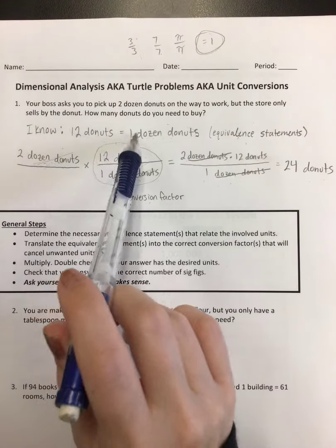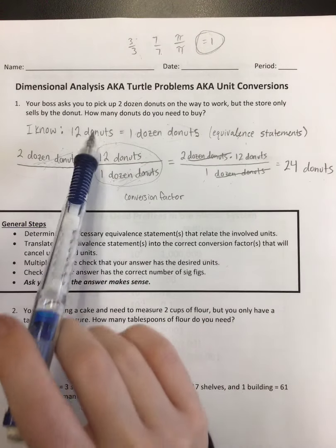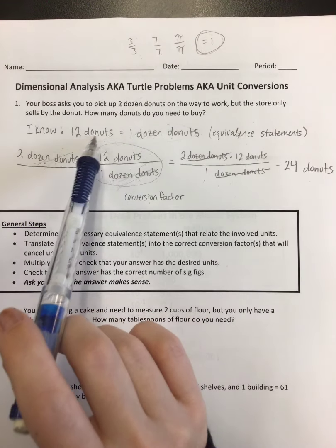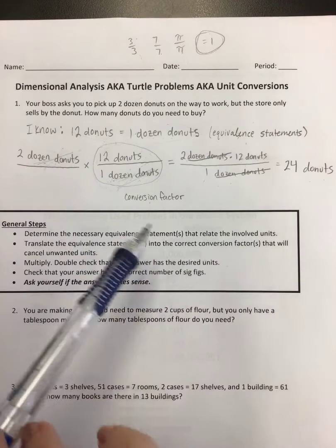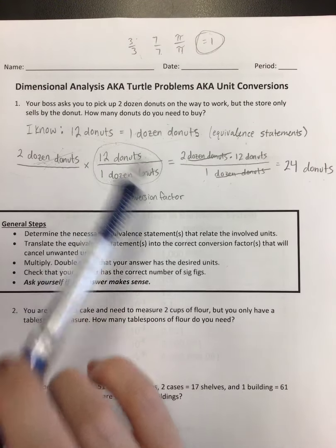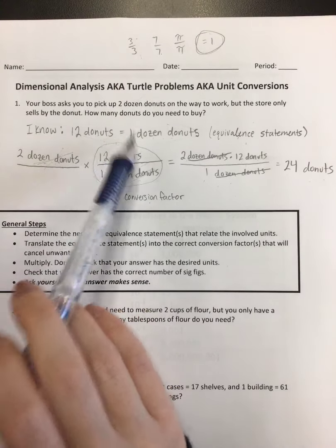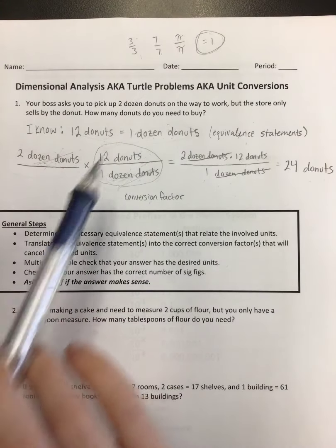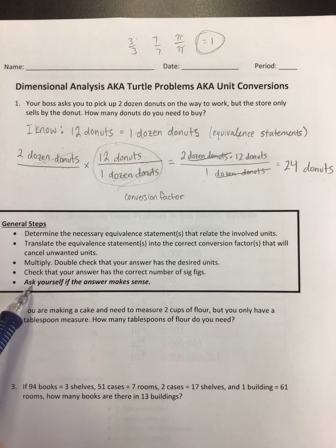Conversion factors are typically exact numbers like we were talking about. One dozen donuts is 12 donuts. I could also say 1.000 dozen donuts is 12.000 donuts. Don't worry about sig figs too much when you're just counting. Only when you have measurements.